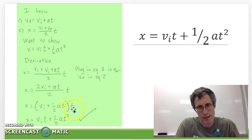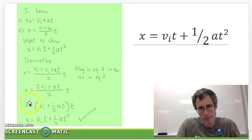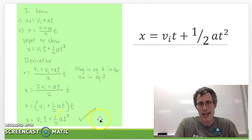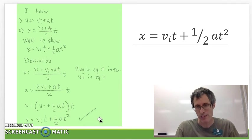Now I've got this whole thing multiplied by time. I distribute time through so I get x equals vi t plus 1 half a t squared because t squared is just t times t and I've got it. That's what I wanted to show.